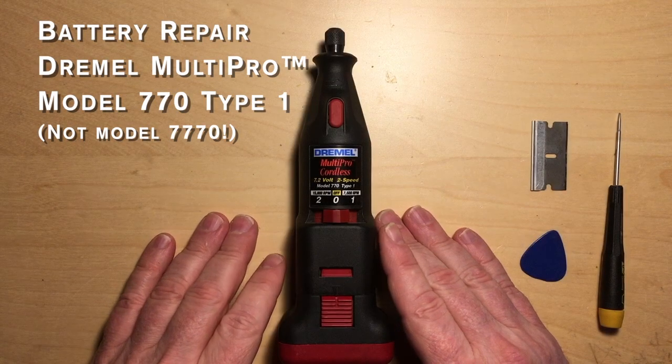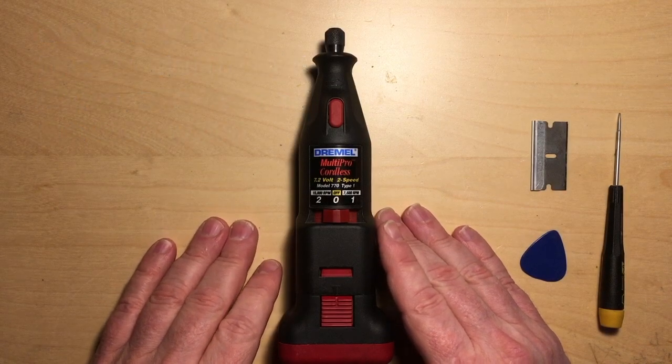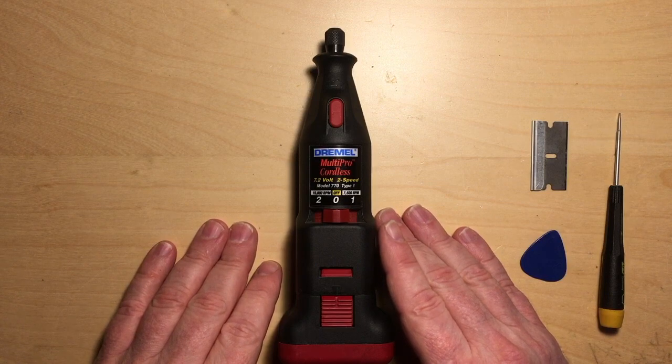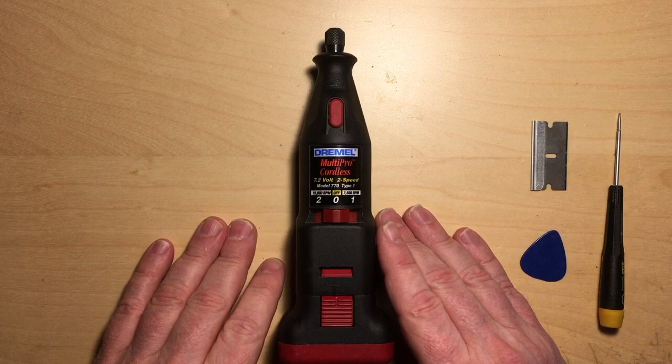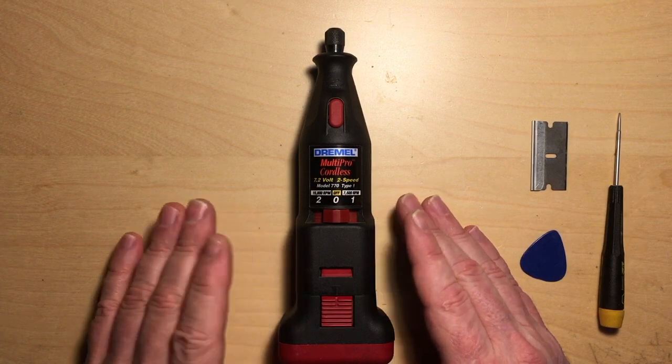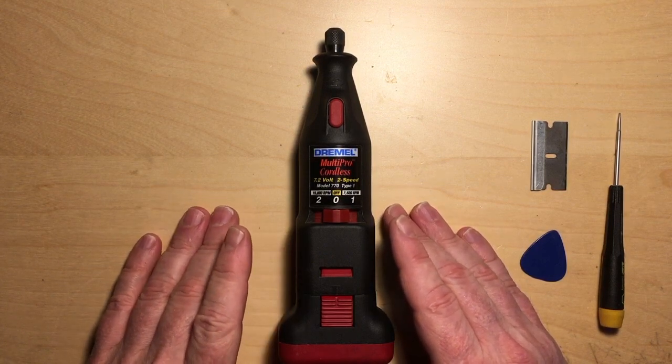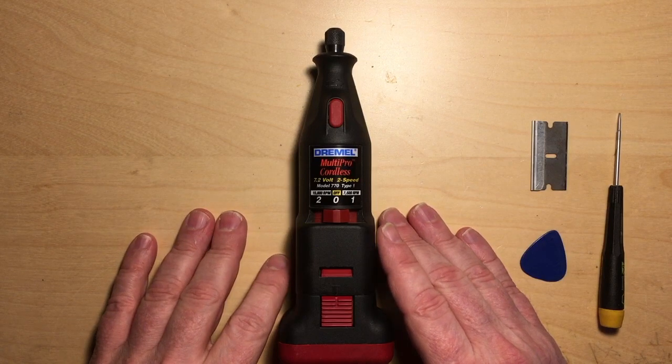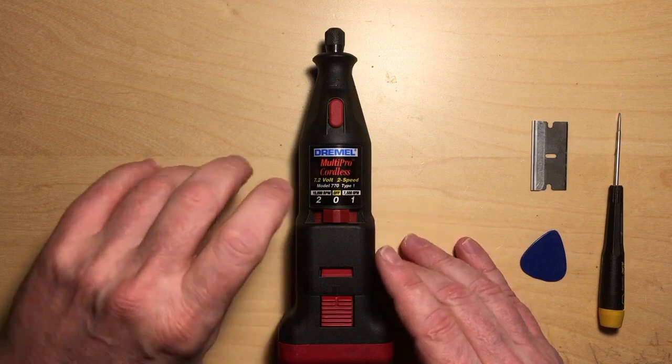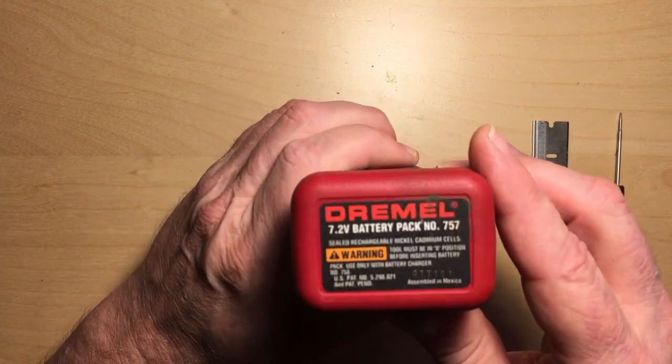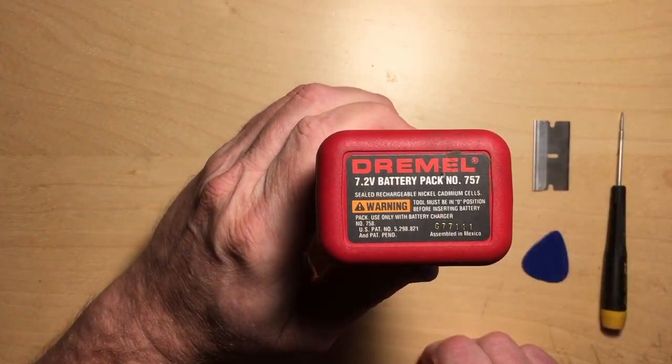This is a fairly ancient Dremel MultiPro cordless rotary tool I've had for decades, and it has an old NiCAD battery pack that has run down. I just tested it - it's only putting out about four and a half volts instead of the 7.2 volts it should. This is a model 770 type one, and they don't make it anymore, and they don't make the battery pack for it anymore, which is the 757, 7.2 volt battery pack.